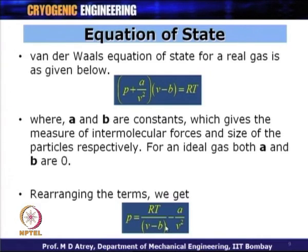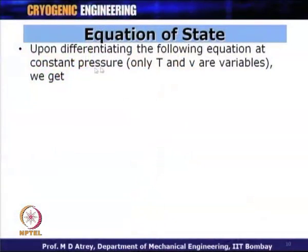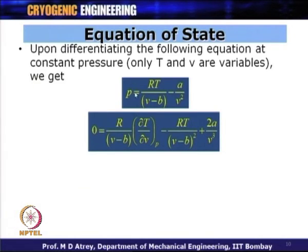Rearranging, P equals RT/(V − B) minus A/V². By differentiating the Van der Waals equation at constant pressure and rearranging, we obtain the value of del V by del T at constant pressure, which we then substitute into the JT coefficient equation.